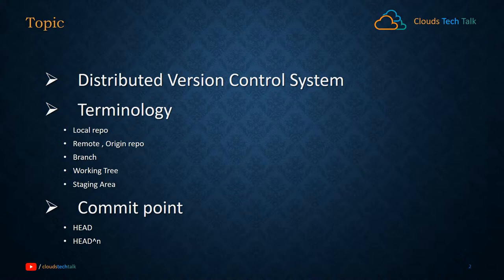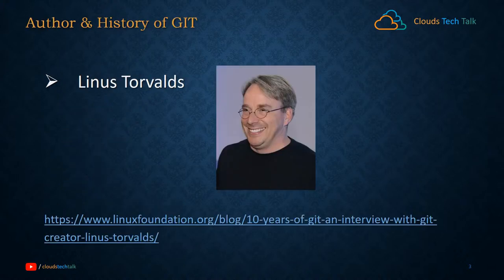We will discuss different terminology used in distributed version control systems, specifically in Git: local repo, remote origin repo, branch, working tree, staging area, and commit points. I'll try to demonstrate it using a whiteboard. But first, let's discuss the history of Git.